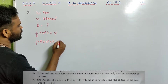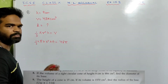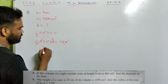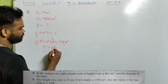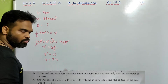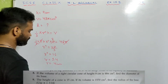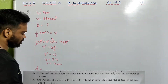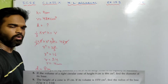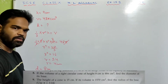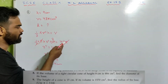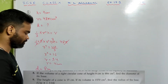Pi cancels out on both sides. So r² = 48 × 3 / 9 = 48/3 = 16. Therefore r = ±4, and we take the positive value, so r = 4 centimeter. The diameter is twice the radius, which is 8 centimeter. Remember the formula for volume and equate it with the given volume. Don't put the value of pi because pi ultimately cancels out.